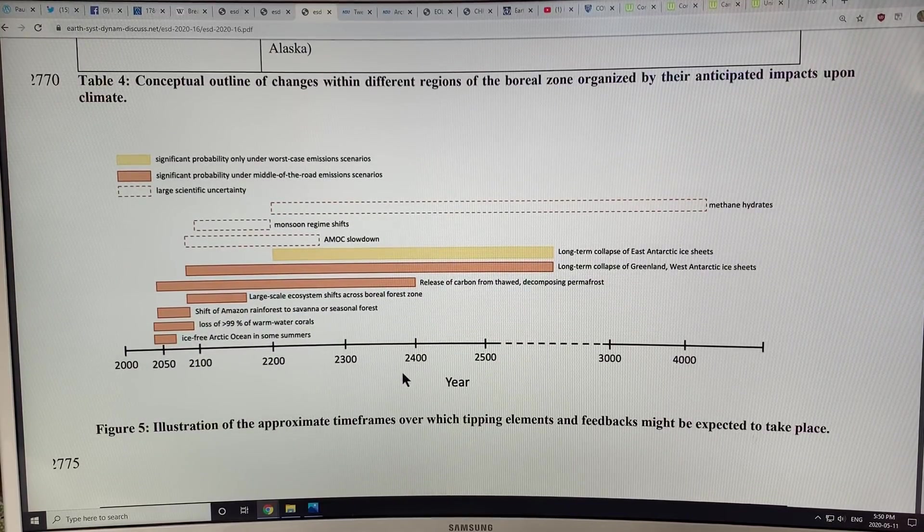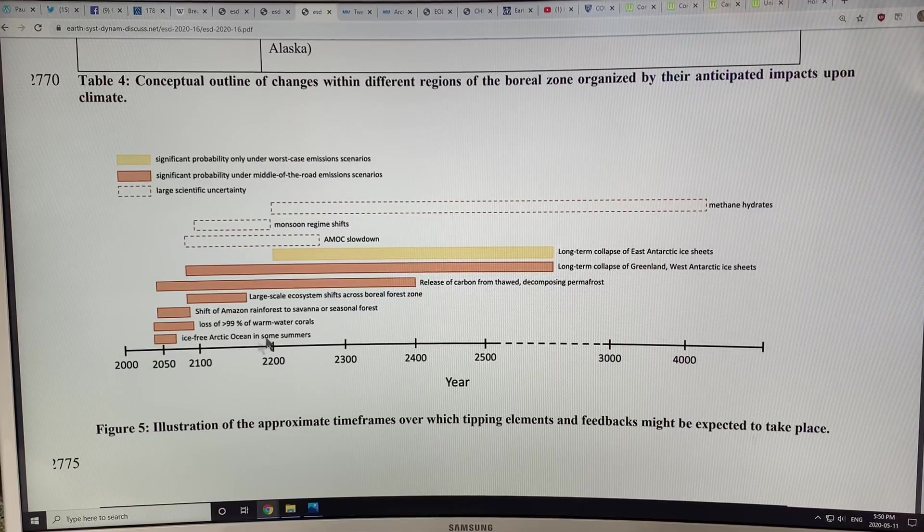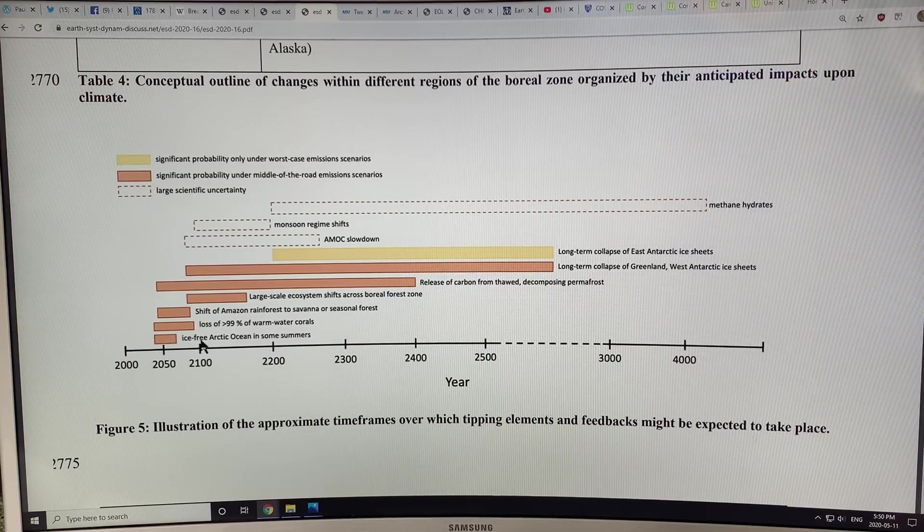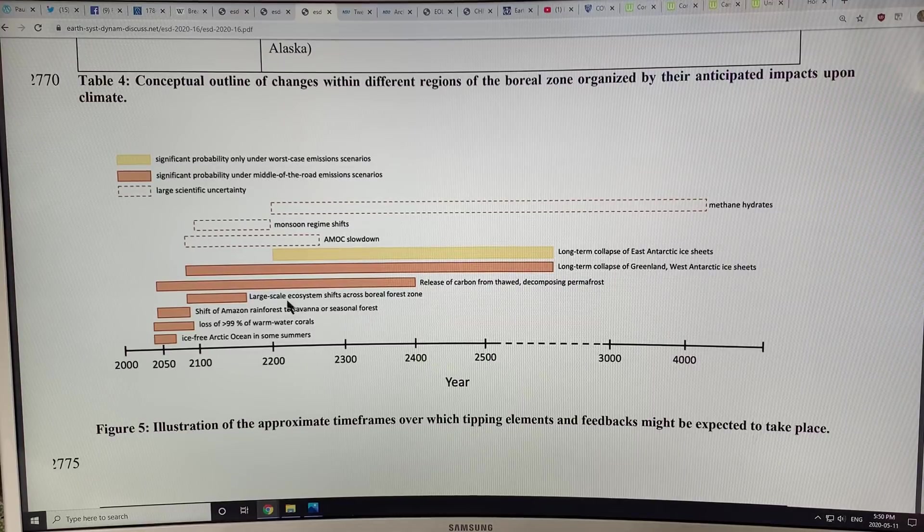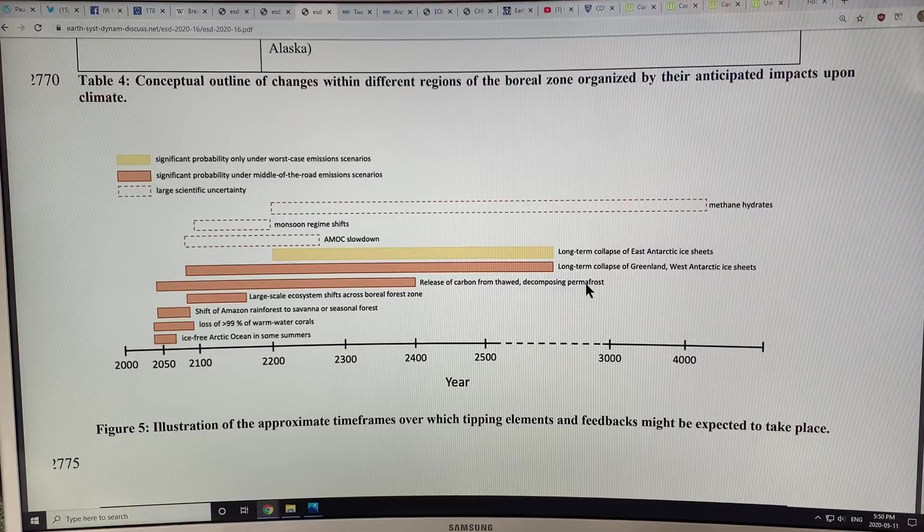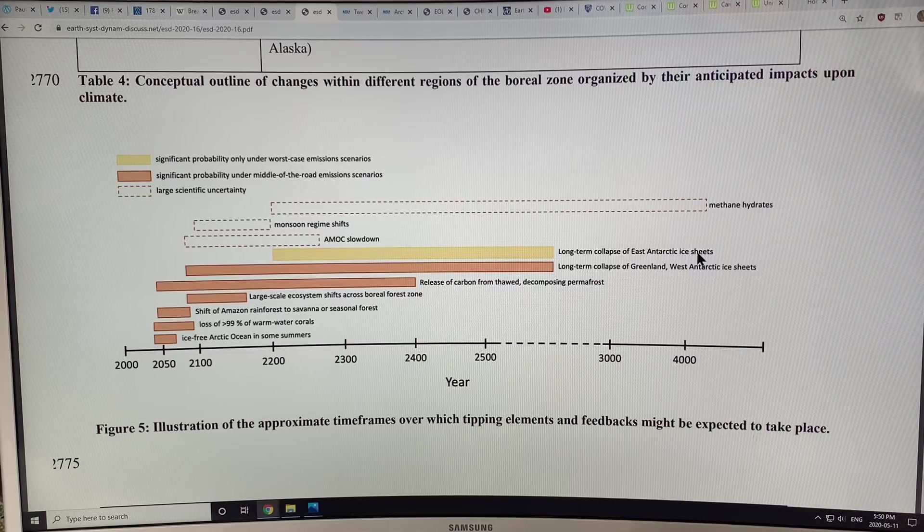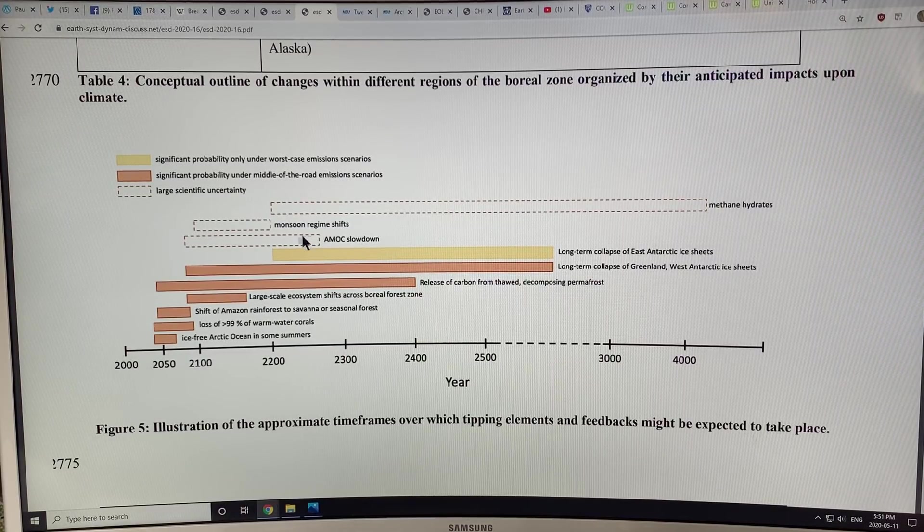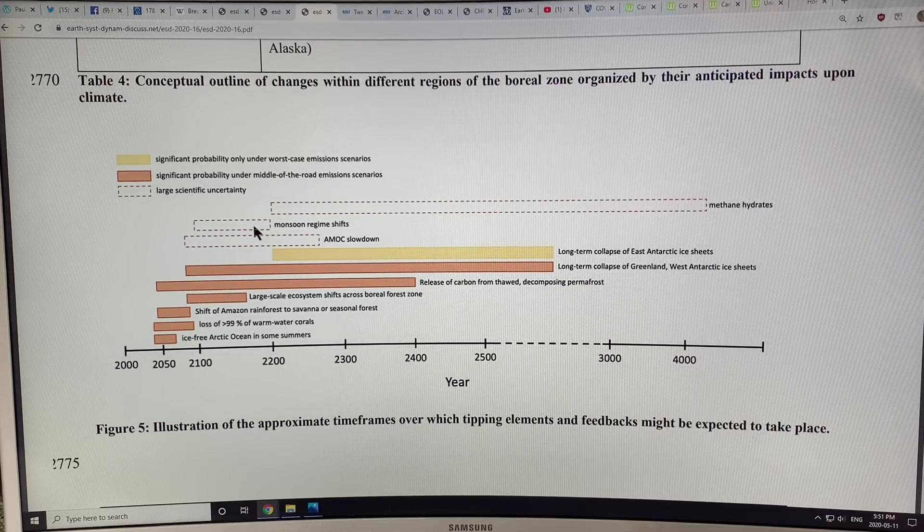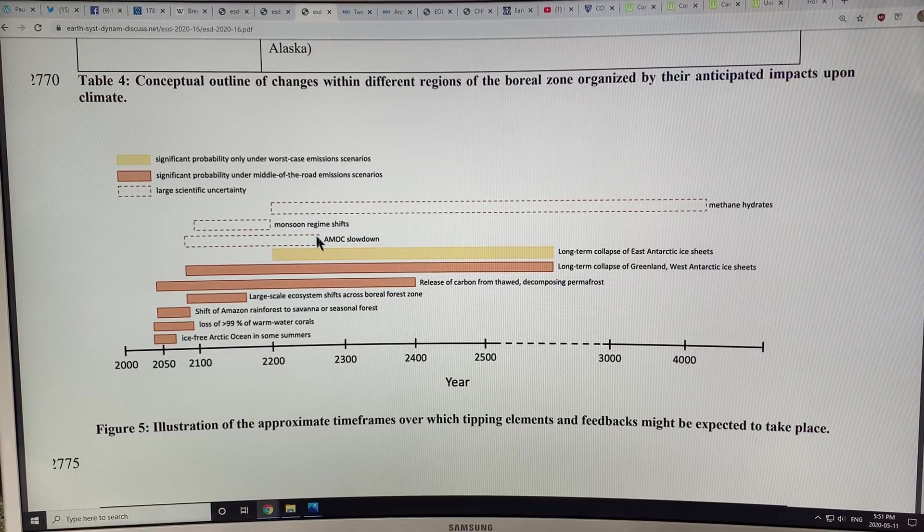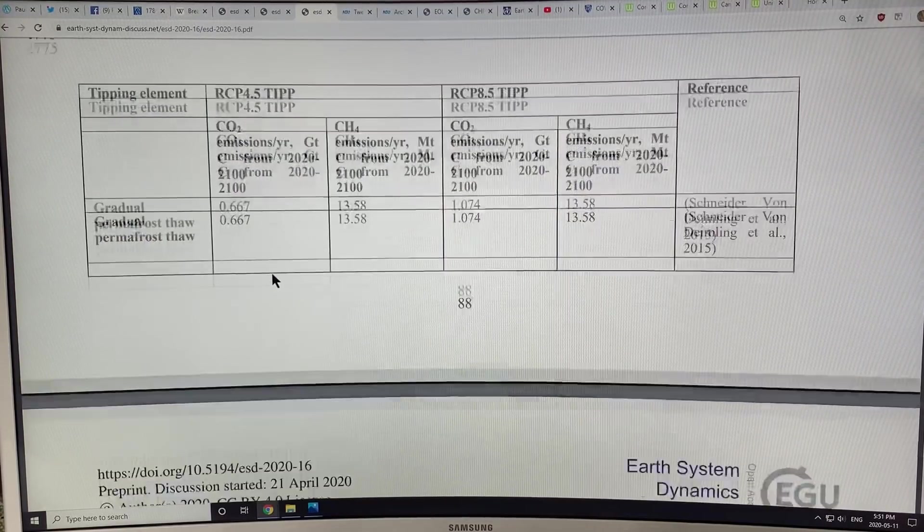This is some of the time scales for tipping elements and feedbacks. Starting right now: ice-free Arctic Ocean in summers, loss of more than 99 percent of warm water corals, shifting of the Amazon rainforest to savannah and seasonal forests, large-scale ecosystem shifts in the boreal region, release of carbon from permafrost, long-term collapse of Greenland and West Antarctic ice sheets, East Antarctic ice sheets. And then less uncertain is the AMOC slowdown, changes in the monsoon shift, regional shifts, methane hydrates. There are all of these different tipping elements.